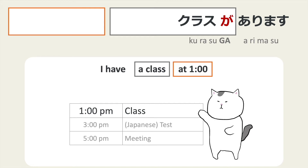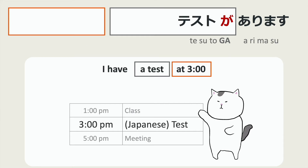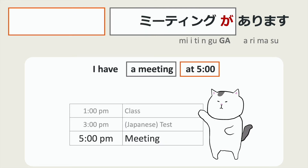Let's see Shiro's schedule and practice. She has a class at 1, so 一時に クラスが あります。 She has a test at 3: 三時に テストが あります。 I have a meeting at 5: 五時に ミーティングが あります。